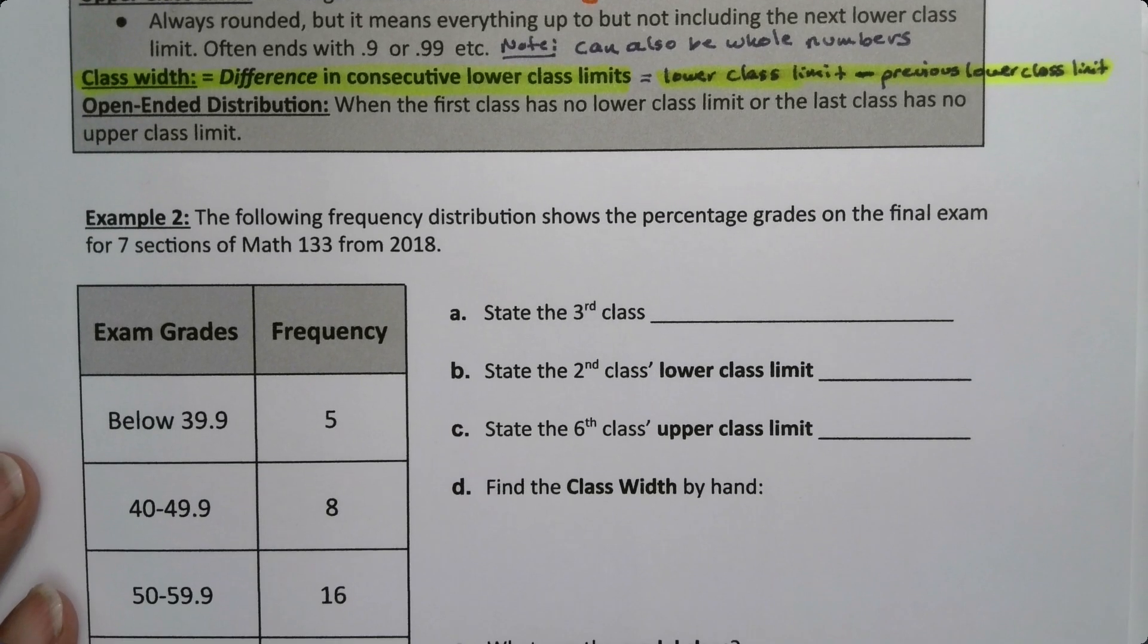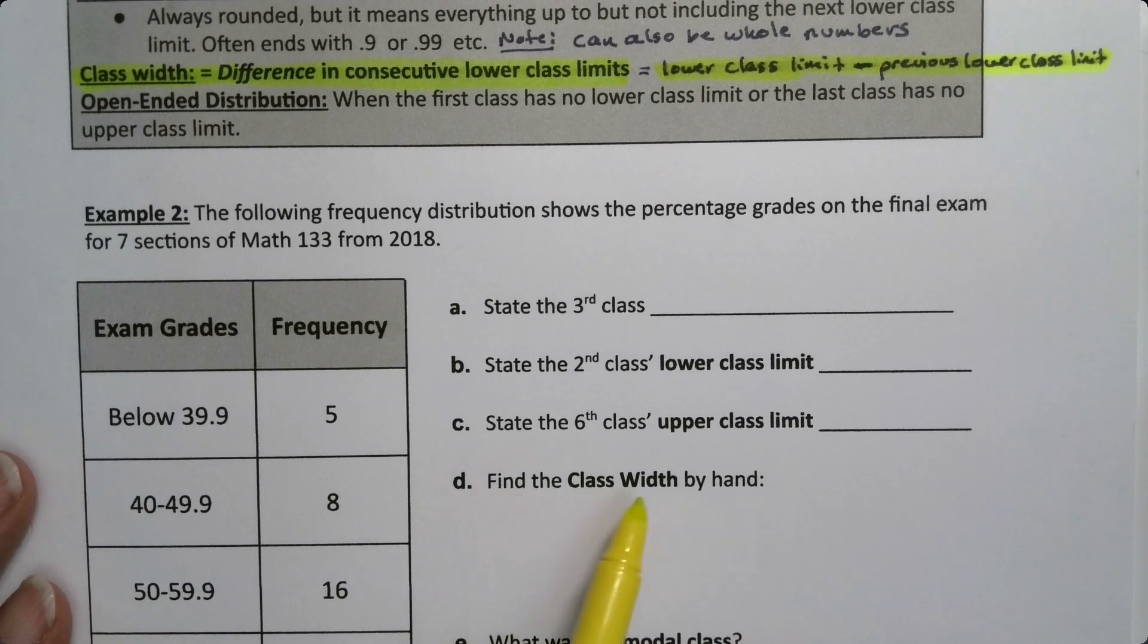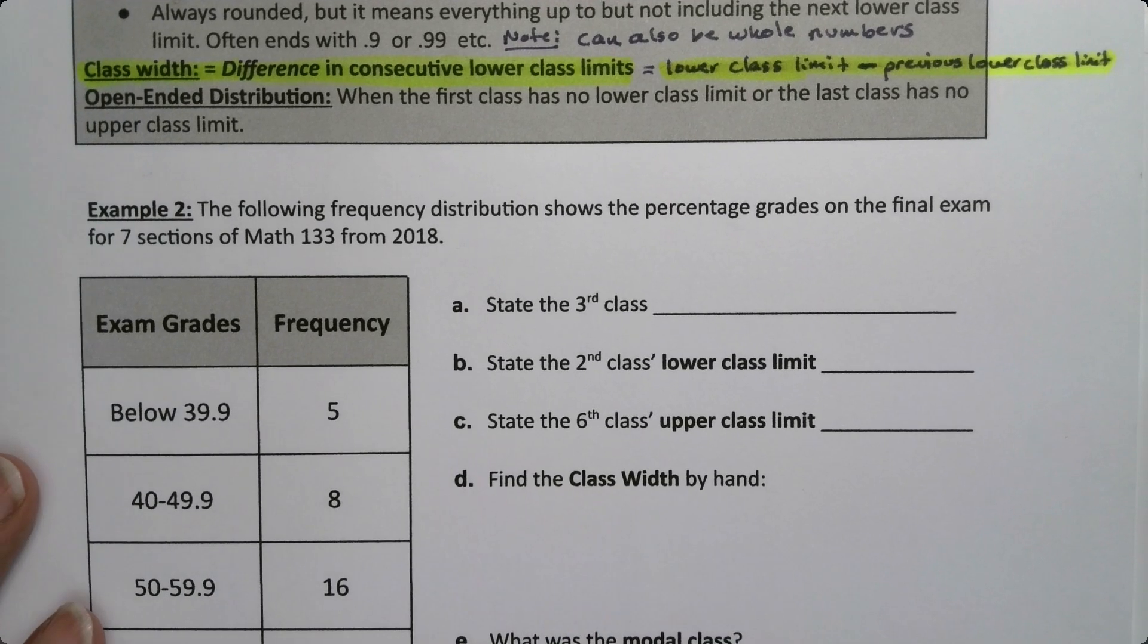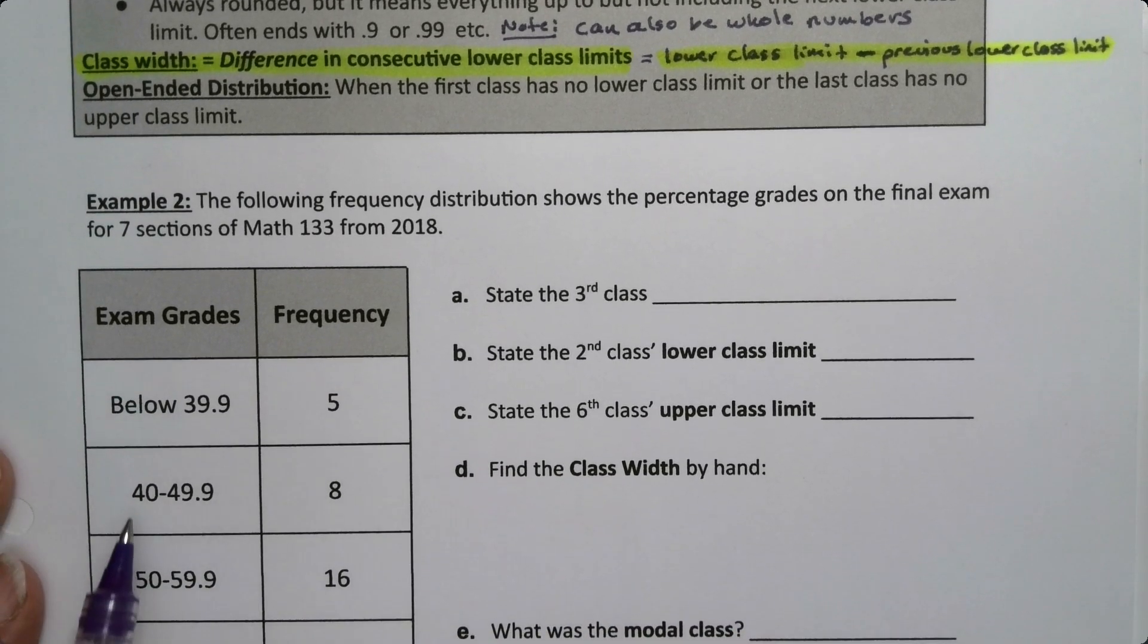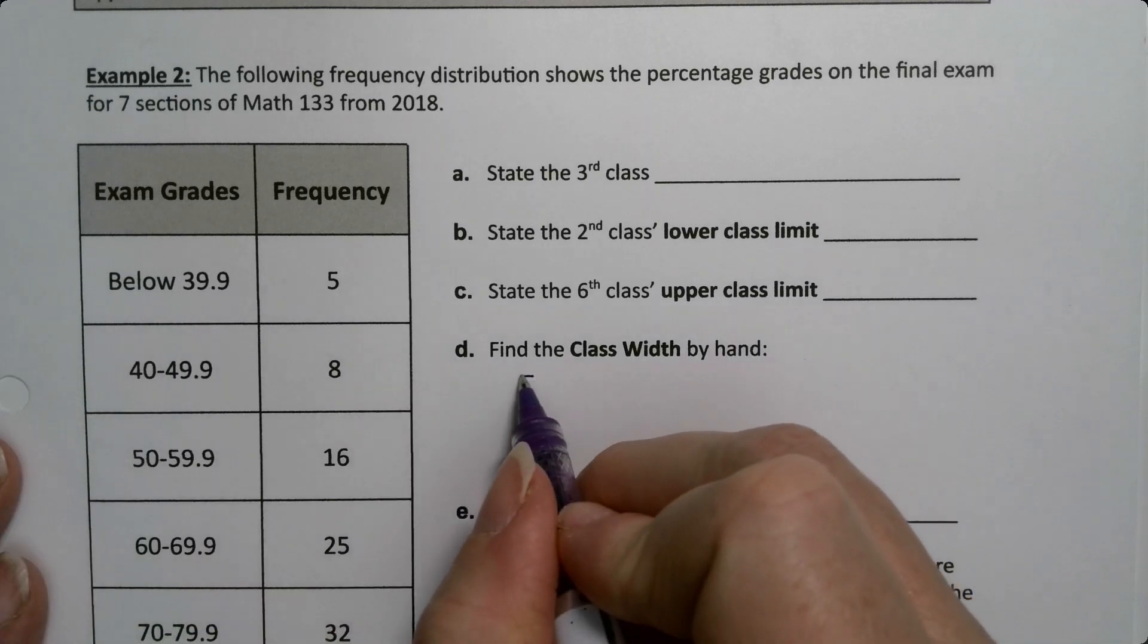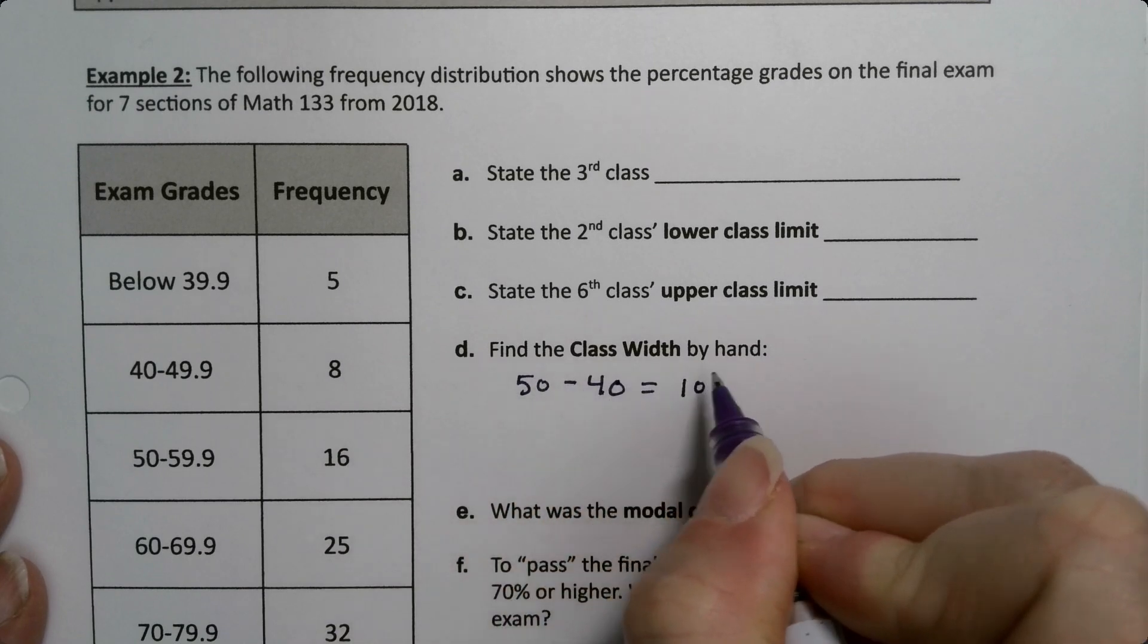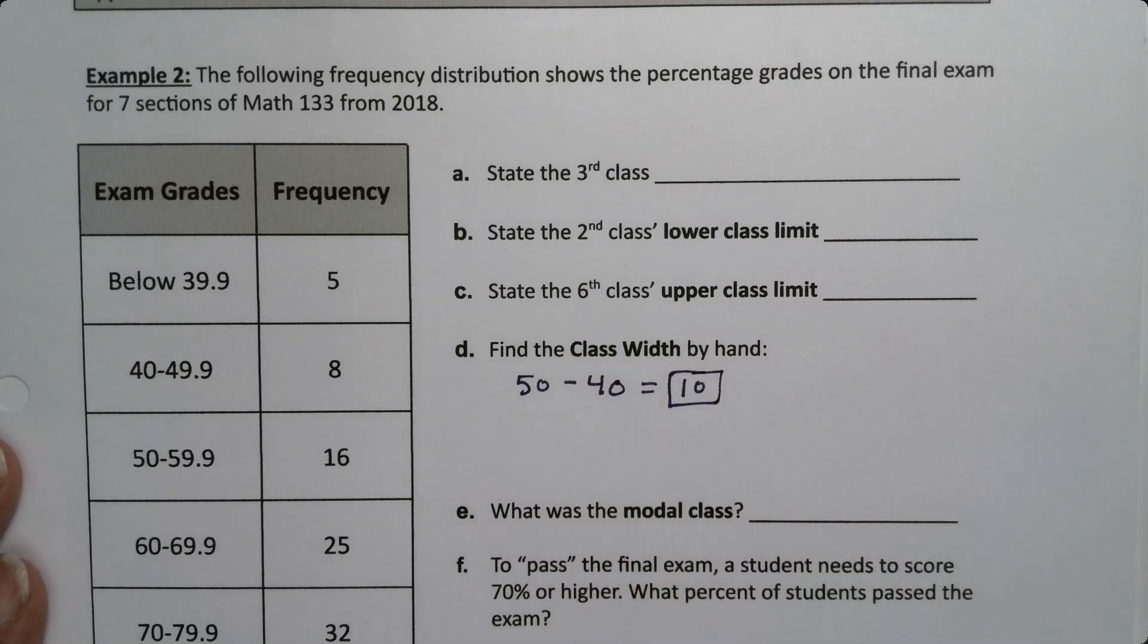Let me do this in an example. I'm going to skip to letter D. We're going to find this class width. The class width is the difference in lower class limits. So you take, for example, 50 take away 40. This lower class limit, which is 50, take away the previous lower class limit, which is 40.